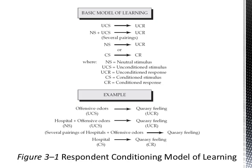This is one example of a basic learning model where you don't necessarily have to do anything for learning to take place — it's a natural response to your environment. For example, you smell something offensive and it makes you feel queasy. Later, you walk into a hospital and smell something offensive that makes you feel queasy. Eventually you start associating that queasy feeling with hospitals — not directly, but over multiple exposures.